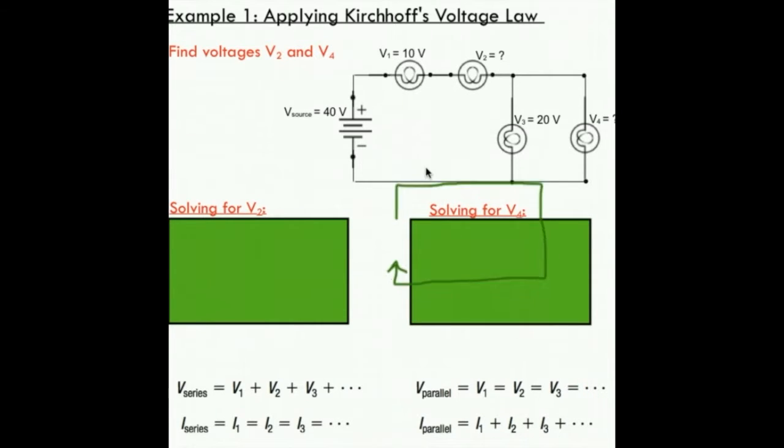Picture the current flowing through this circuit. This current's going to flow through these lamps and make its way back to my power source. Our formula says the voltage leaving my source is going to be equal to the sum of all those voltages throughout my series circuit.